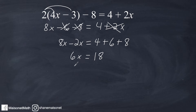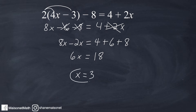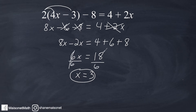So 8x minus 2x is 6x, and 4 plus 6 plus 8 is 18. So now we have the equation 6 times x is equal to 18. So x must be 3, because that is the only thing you can multiply by 6 to make 18. If you wanted to show your work to completion, when you have only a coefficient remaining, you just divide both sides by that coefficient. So that leaves us with x equals 18 divided by 6, which is 3.